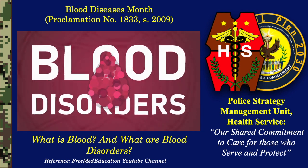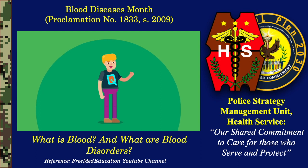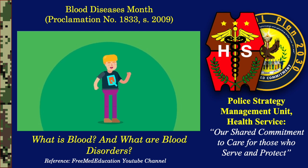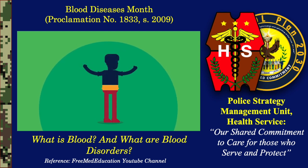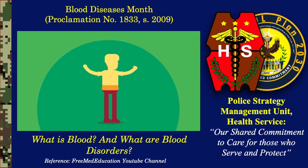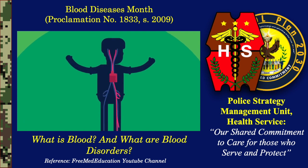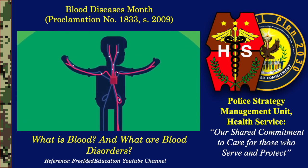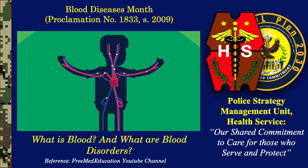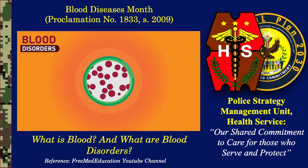Blood disorders. Before we study about blood disorders, we must know the composition of blood in a healthy individual. Blood is a body fluid in humans and other animals that delivers necessary substances such as nutrients and oxygen to the cells. In vertebrates, it is composed of blood cells suspended in blood plasma.